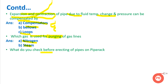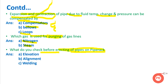The next question is: what do you check before erecting pipes on a pipe rack? This is a construction-related question. The checks include the elevation of the pipe, the alignment, and the welding. After confirming all three, clearance is given for the erection of the pipe.